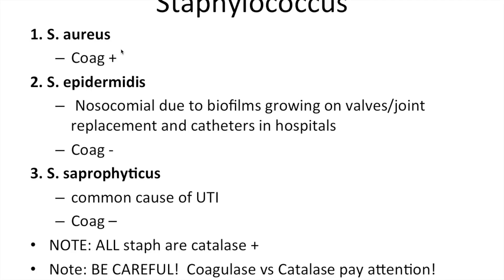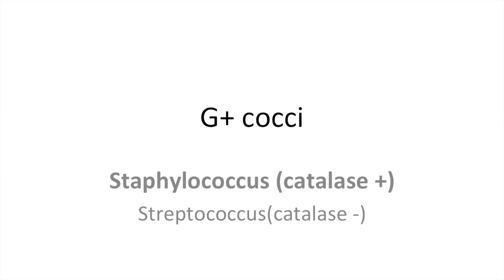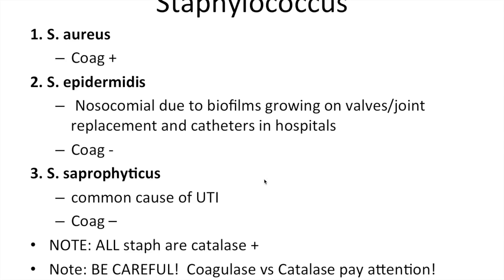Staph aureus is going to be coagulase positive. Notice we're moving on to something different than catalase here. Catalase is to distinguish what type of gram-positive cocci bacteria you have — it distinguishes Staph from Strep. The test to distinguish between Staphylococcus species is coagulase. We'll cover that in a slide coming up.